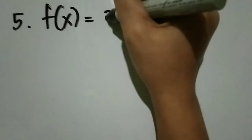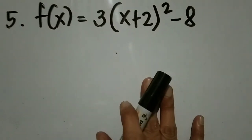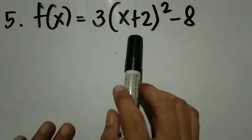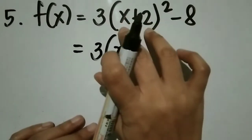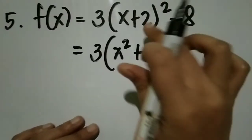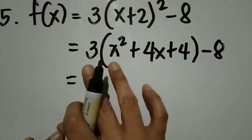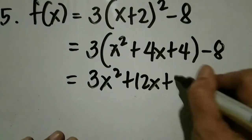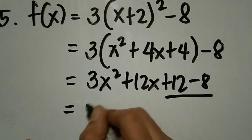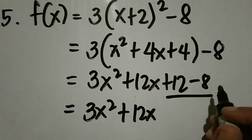For our last number, number 5: f(x) = 3(x + 2)² - 8. From vertex form, i-transform natin siya into quadratic function. Square natin yung ating binomial. Square the first term: x². Multiply the two times 2: 4x. Square the last term: 4. Then minus 8. Distributive property: 3x², 3 times 4x is 12x, and 3 times 4 is 12. Then minus 8. Combine similar terms: 3x² + 12x, then 12 minus 8 equals 4.